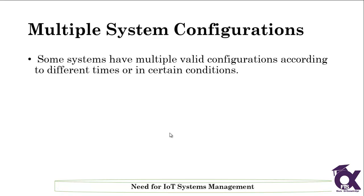The next thing is multiple system configuration. Some systems have multiple valid configurations according to different times or certain conditions. The system is capable of configuring itself automatically according to the situation or special circumstances, so the system can have multiple valid configurations.